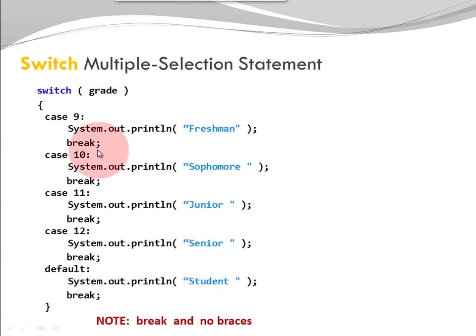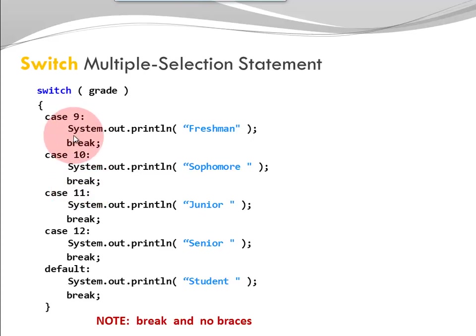Note that we have the keyword break, and there are no braces for each of my cases. In an if-else statement, I have code blocks that include the different code statements for each selection branch. We don't do that in switch. It's only a single statement with a break, but there could be multiple statements and still no braces. We use the keyword break to indicate that we are done with our execution.